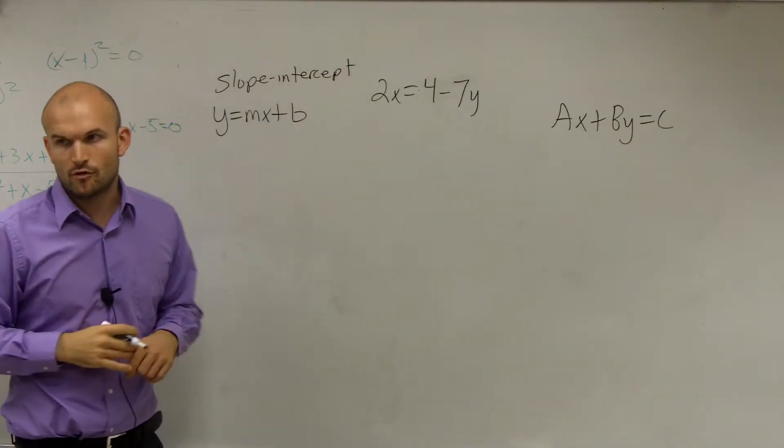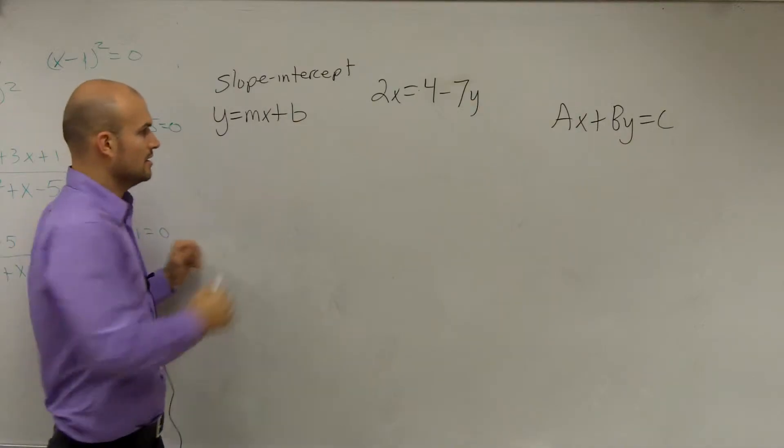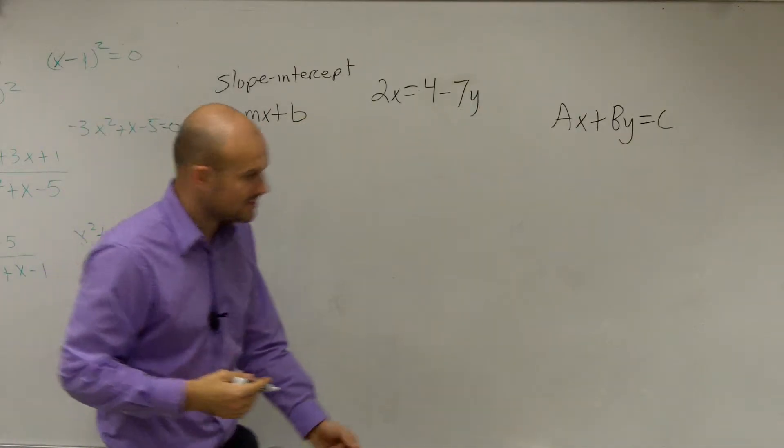This is what we call slope-intercept form. This was in your notes, right? Where M is equal to your slope, B is equal to your y-intercept.